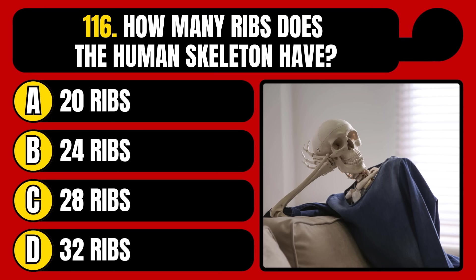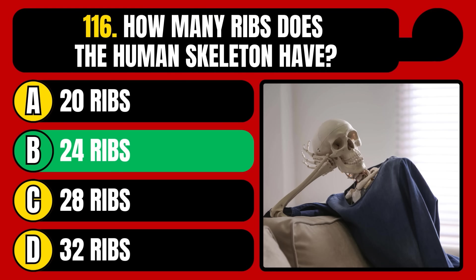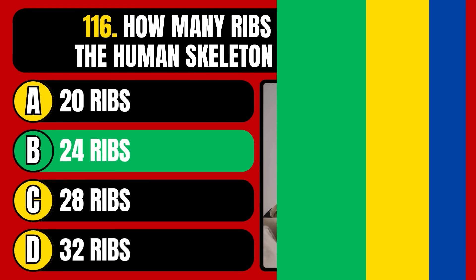How many ribs does the human skeleton have? 20 ribs, 24 ribs, 28 ribs, or 32 ribs? The correct answer is option B, 24 ribs.